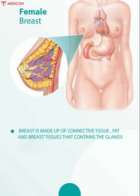Breast is made up of connective tissue, fat, and breast tissue that contains glands that can make milk. The breast is also called the mammary glands. The breast is tissue overlying the chest, and the milk-producing parts of the breast are organized into 15 to 20 sections called lobes.